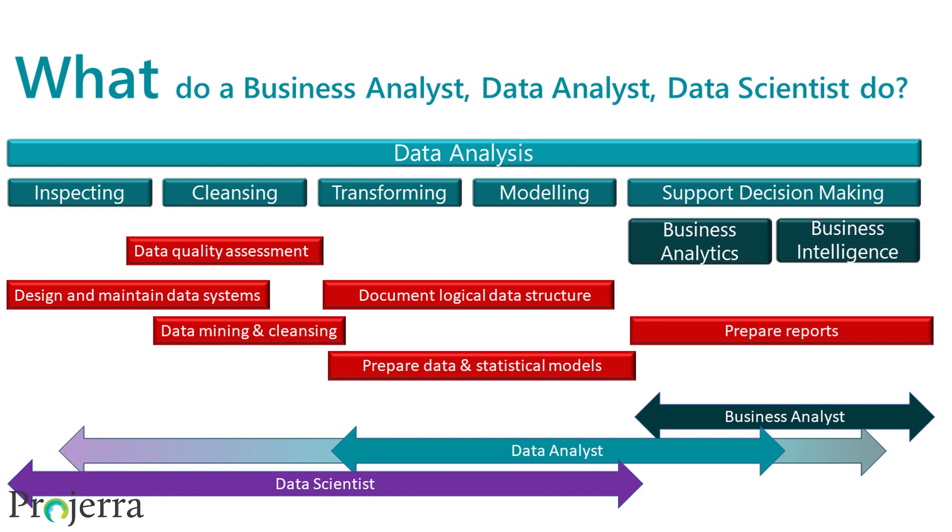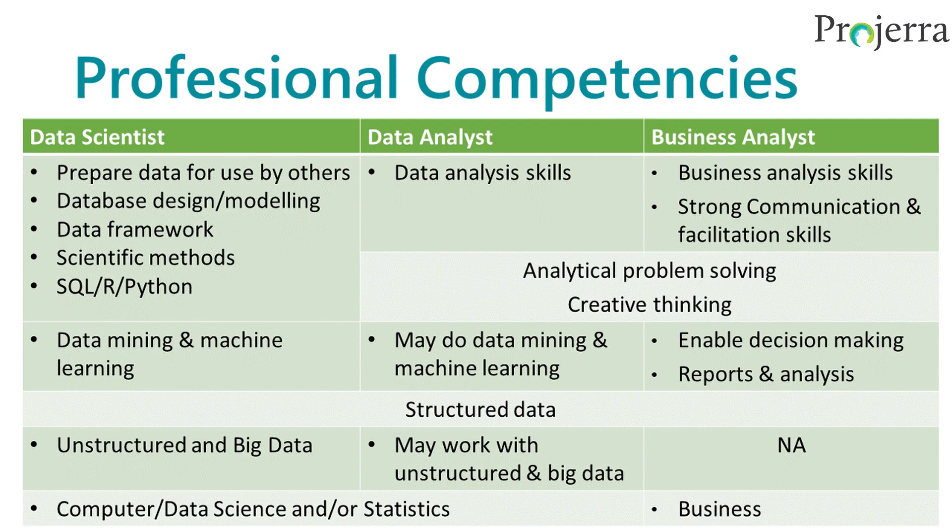The differences between data science, data analysts, and business analysts are subtle — there is a lot of overlap. Business analysts have a great deal of skill devoted to analyzing the business; they're strong communicators and facilitators. Data analysts have strong data analysis skills, analytical problem-solving, and critical thinking, but are a bit more data-savvy. Data scientists are the data wizards — they have deep technical knowledge of tools like SQL, R, and Python, designing and modeling data and preparing it for use by others. Data mining and machine learning tend to be in the realm of the data scientist and advanced data analyst. All three work with structured data, while data scientists and data analysts handle unstructured and big data.